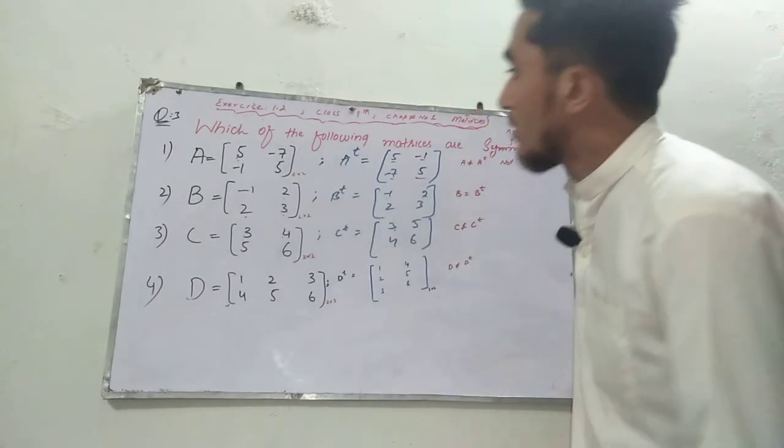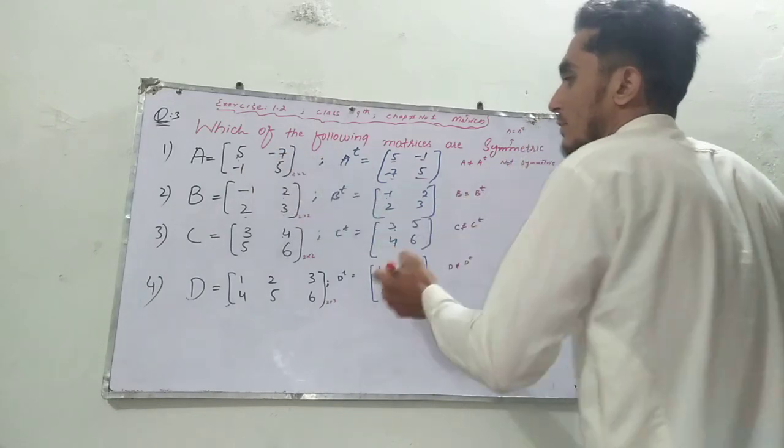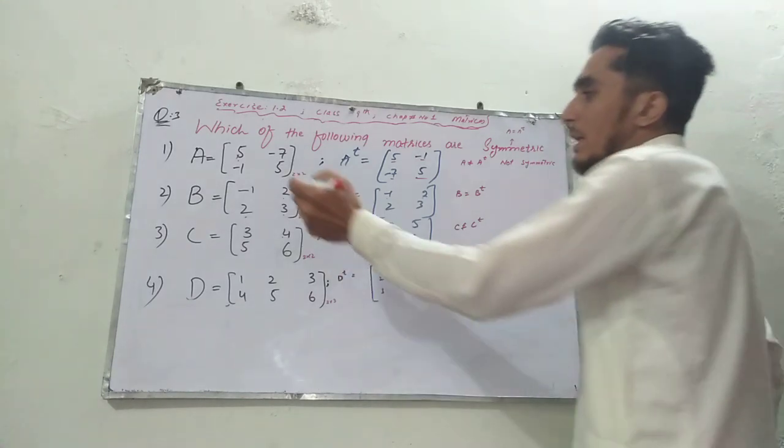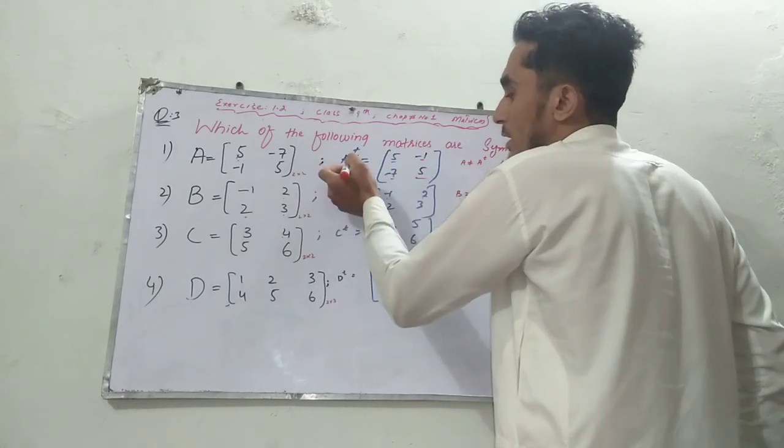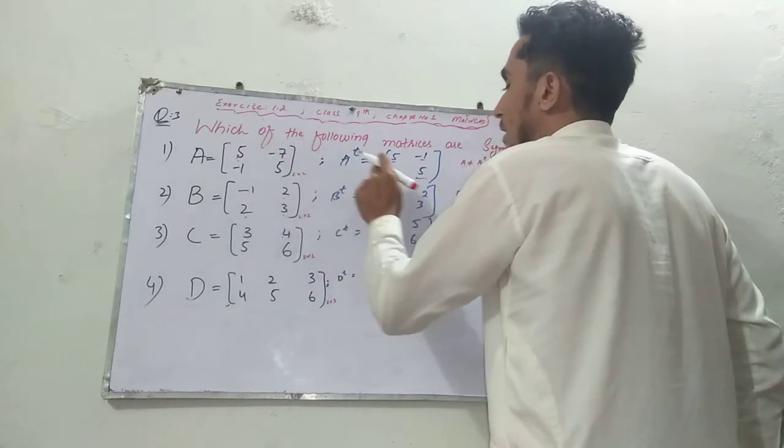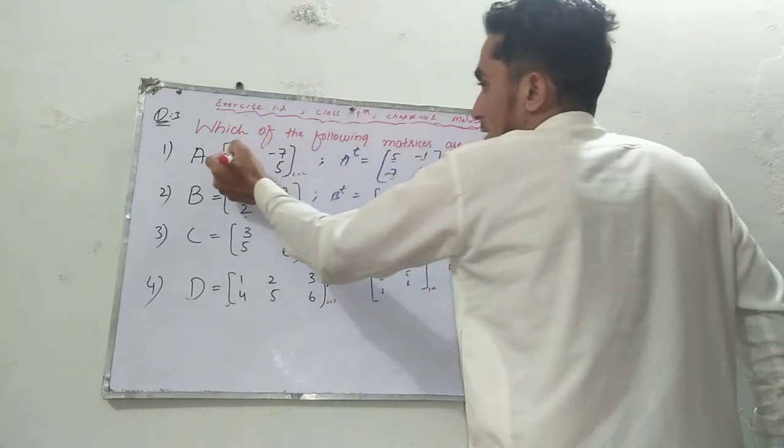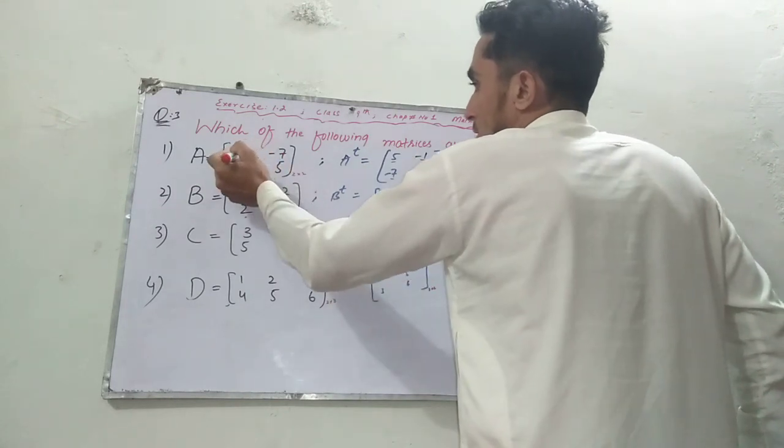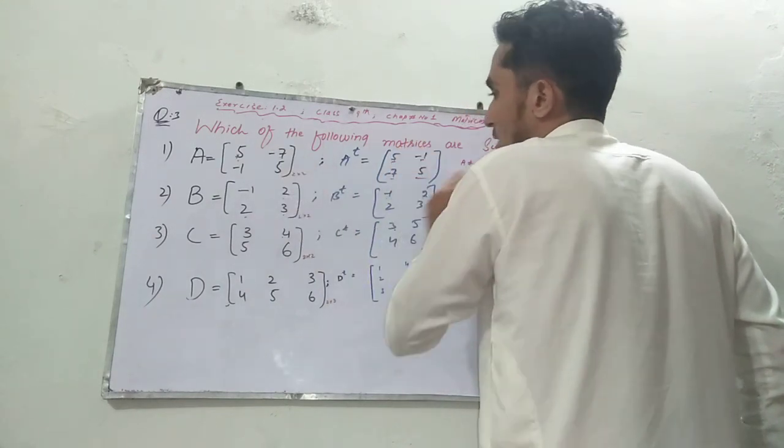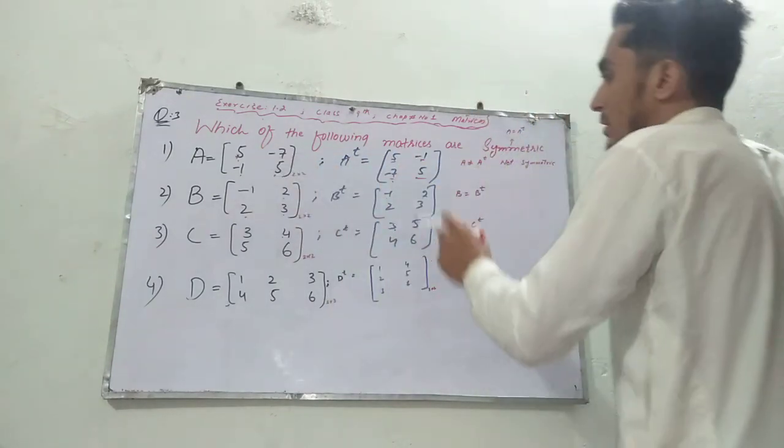Question number 1: A is equal to matrix [5, -7; -1, 5]. First we show the order is 2 cross 2. Then we find the transpose. When we transpose, column 1 becomes row 1, column 2 becomes row 2. So we have 5, -1, -7, 5. This is not equal to A transpose, so the answer is not symmetric.